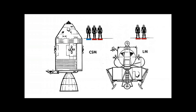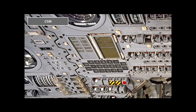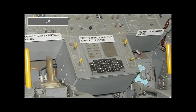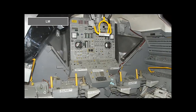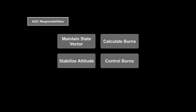The command and service module and the lunar module each contained one AGC. It was the same hardware, but attached to partially different I/O devices, and with the software adapted for the specific spacecraft. The astronauts interact with them through the display and keyboard units, which are mounted alongside hundreds of switches. The computer's responsibilities during the mission are to track the position and speed — the so-called state vector of both spacecraft — stabilize attitude, calculate and control engine burns, and monitor or control the Saturn V during launch.